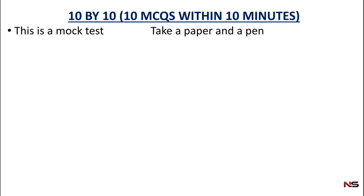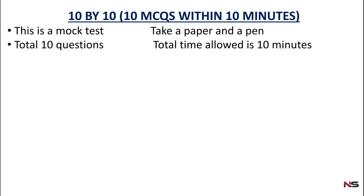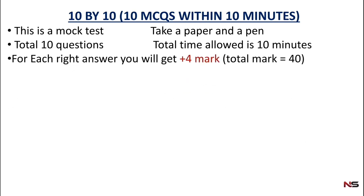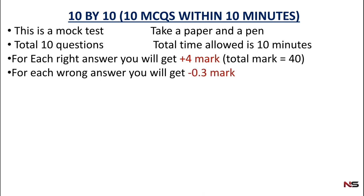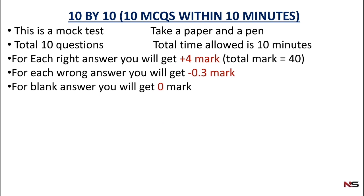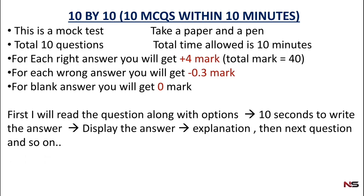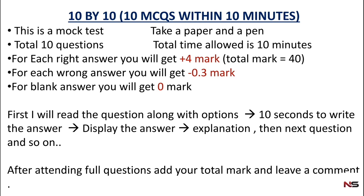The rules for writing this exam: first of all, you have to take a pen and paper to write down the answers. There will be a total of 10 multiple choice questions to cover within 10 minutes. For each right answer you will get positive 4 marks, and for each wrong answer you will get negative 0.3. If you are not attending the question you will get 0 marks. I will read the questions along with options, then give 10 seconds to write down the answer, after which I will display the answer, and we go to the next question. After attending all questions, add up your total marks and leave a comment.